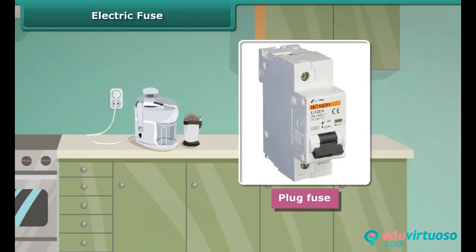A plug fuse is used in our houses. The plug fuse consists of two parts: the porcelain casing and the porcelain grip. This fuse has a thin wire of tin and lead alloy, which has a low melting point. A cartridge fuse is generally used in electrical appliances.